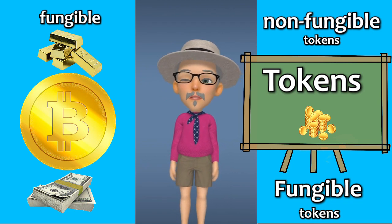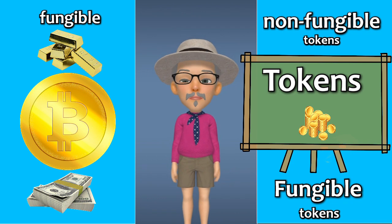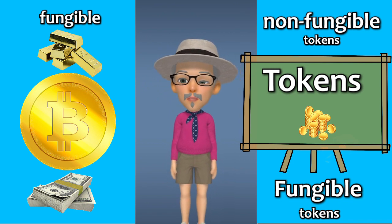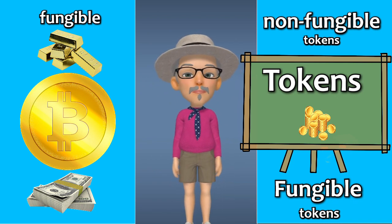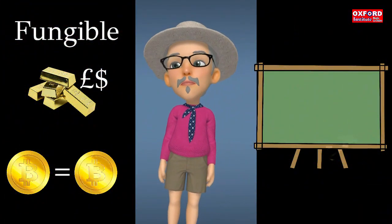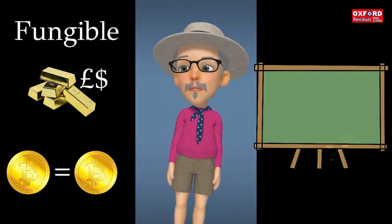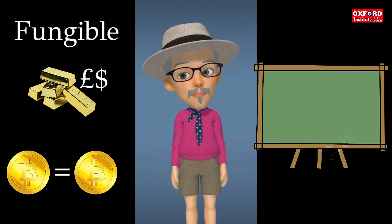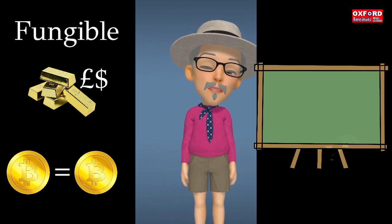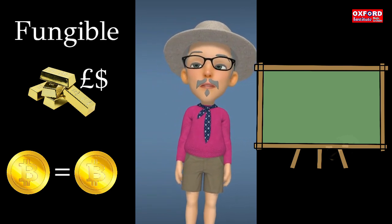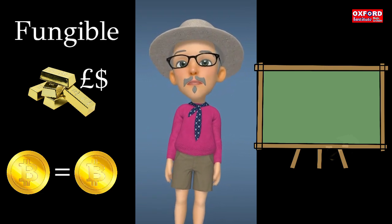The Bitcoin blockchain network has a single token called Bitcoin — you've probably heard about it. We can understand the token as a type of record on the blockchain that can be used as currency — a digital currency, a bit like money. Just like traditional money, Bitcoin is fungible, meaning you can replace one Bitcoin with another Bitcoin. You can exchange one for another — one pound coin for another, one dollar for another. That's what we mean by fungible.